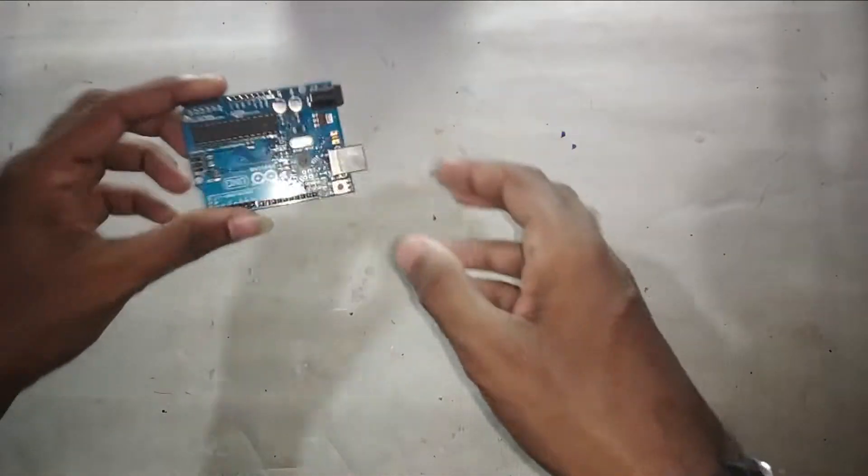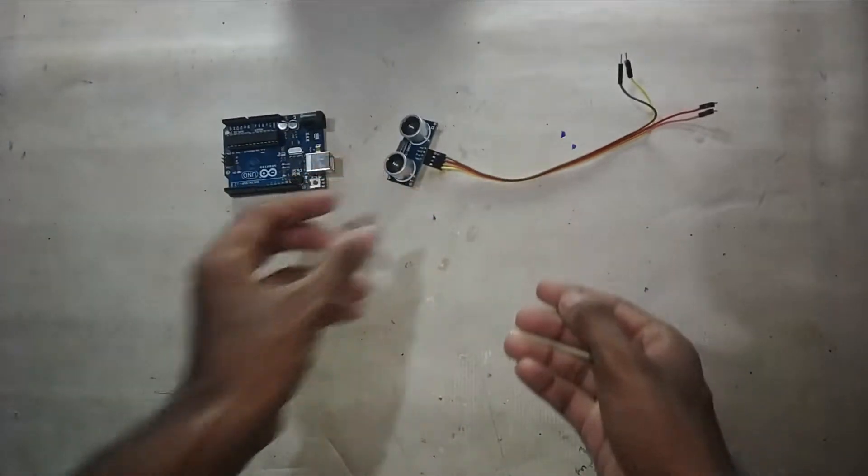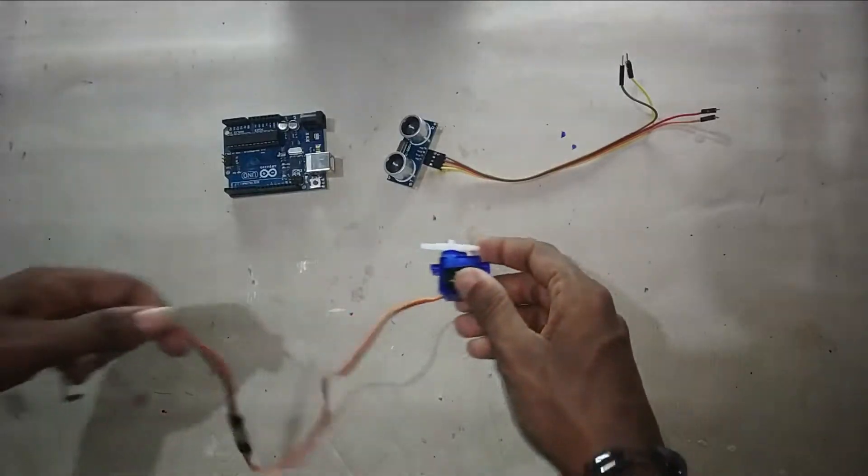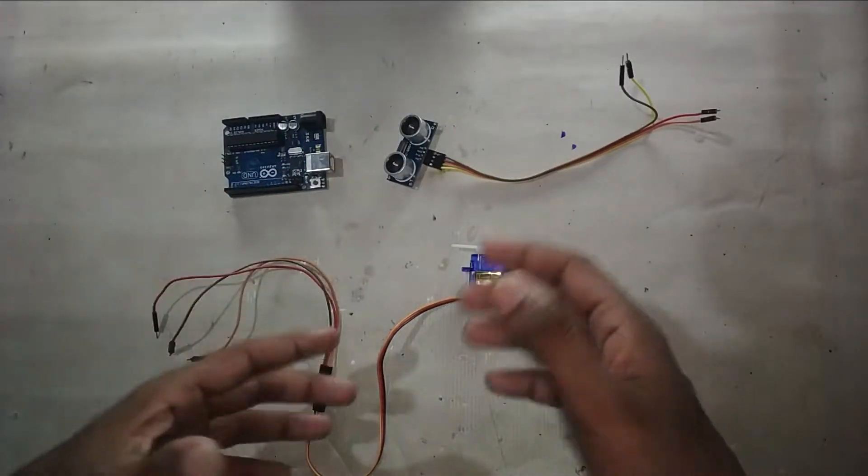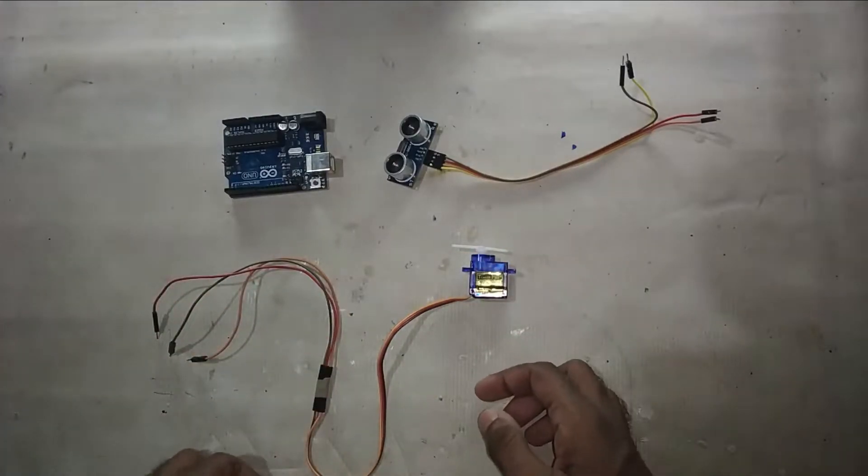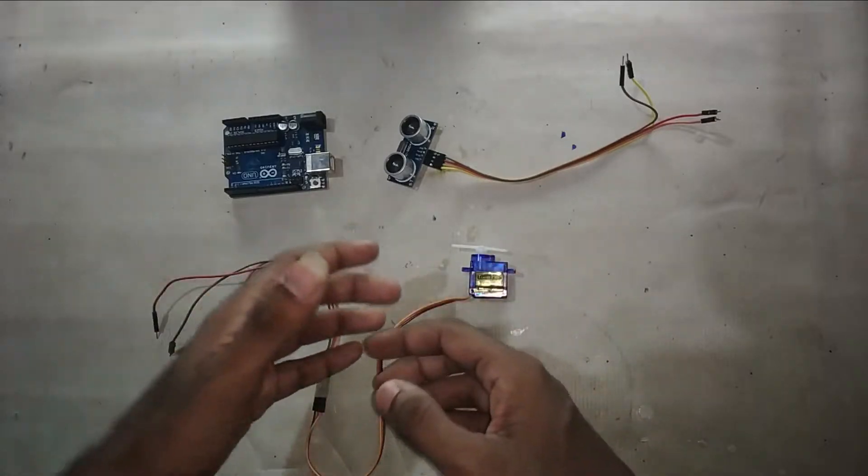For this project we need Arduino Uno, one ultrasonic sensor, and one servo. These are all the things that we need. Now I need to do the circuit connection. Read your code carefully, then you can do the circuit connection correctly.